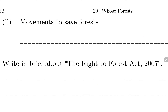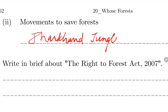Movements to save the forest: One movement named in your book is the Jharkhand Jungle Bachao Andolan - remember this. Suryamani also participated in this movement. The forests of Jharkhand were being cut, so this movement was started.